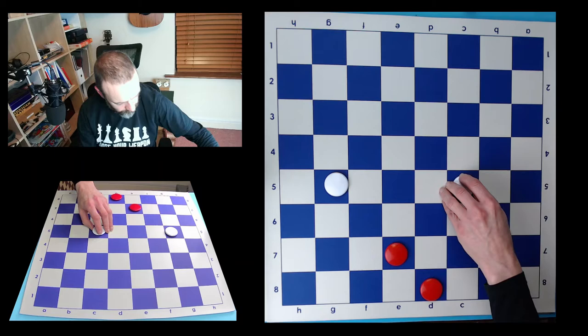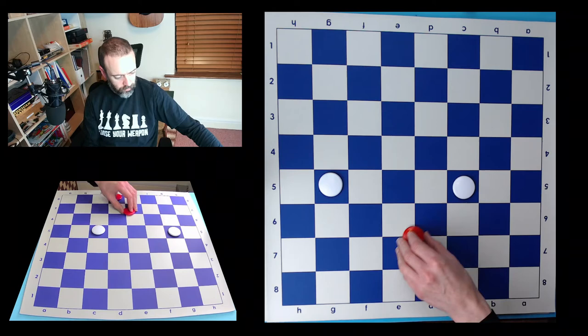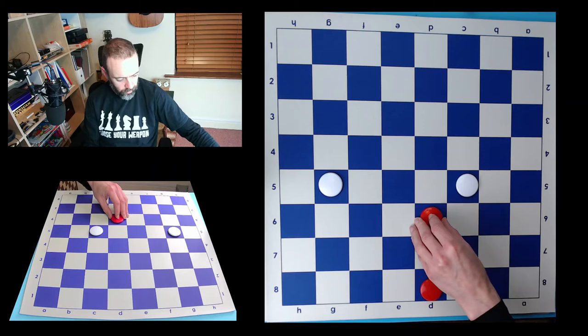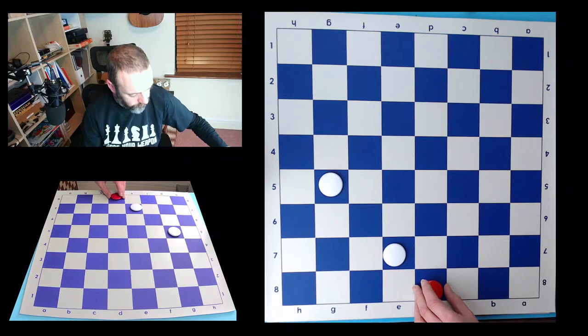Now, these two white pieces are further away, but the same type of tactic still works here. Here, we give away one piece and he has to take it. He has no choice. And then we take two.